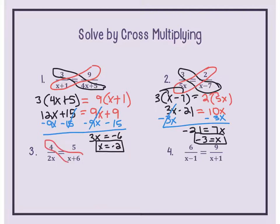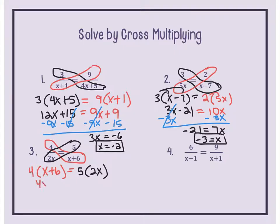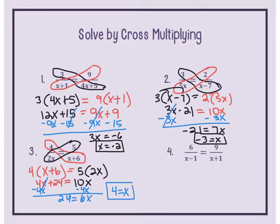Question number 3: cross-multiply. So 4 times x plus 6 equals 5 times 2x. Distribute on the left: 4x plus 24 equals 10x. Subtract 4x from both sides to get 24 equals 6x. Divide by 6 on both sides: x equals 4. Checking the denominators with x equals 4 gives no division by 0, so that is the answer.